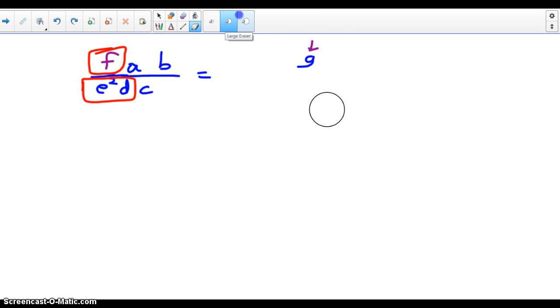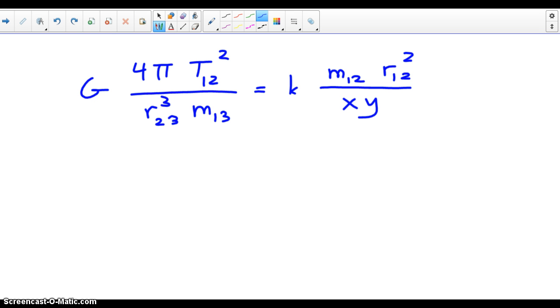Let's take another example. Because this is such a big example, I'm going to rewrite it again. What we want to isolate, let's say, is m1,2. So the first thing I'm going to do is rewrite everything that's on the left currently. So what do we have right now on the left side? We have a g in the numerator, a 4 pi, we have a t sub 1, 2 squared, we have an r 2, 3 squared, an m 1, 3. So far, I haven't changed left or right side yet.